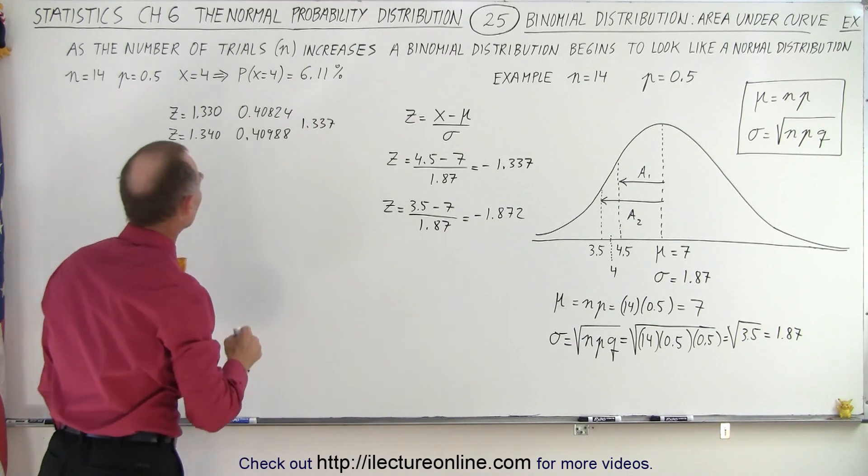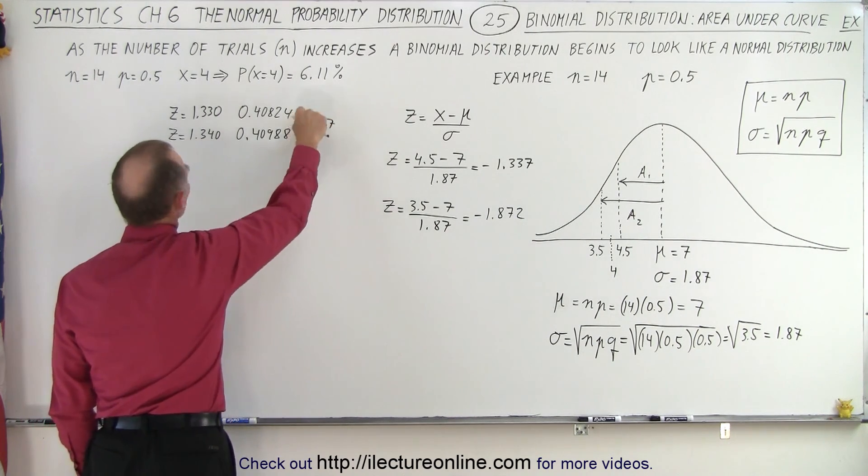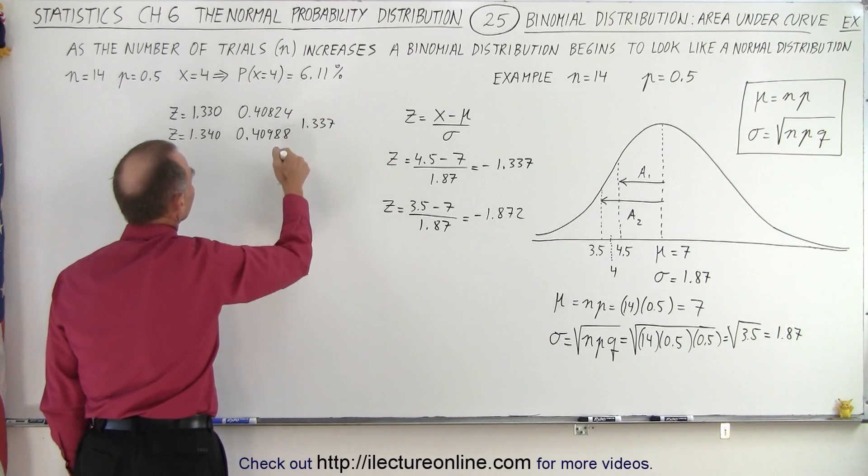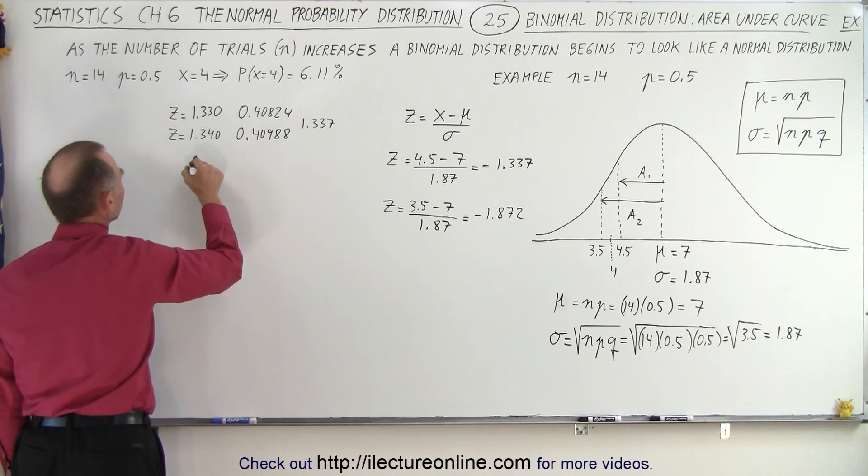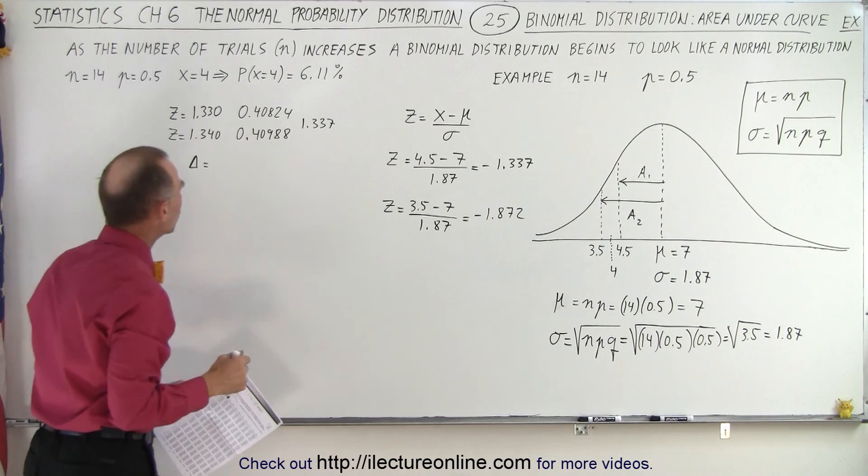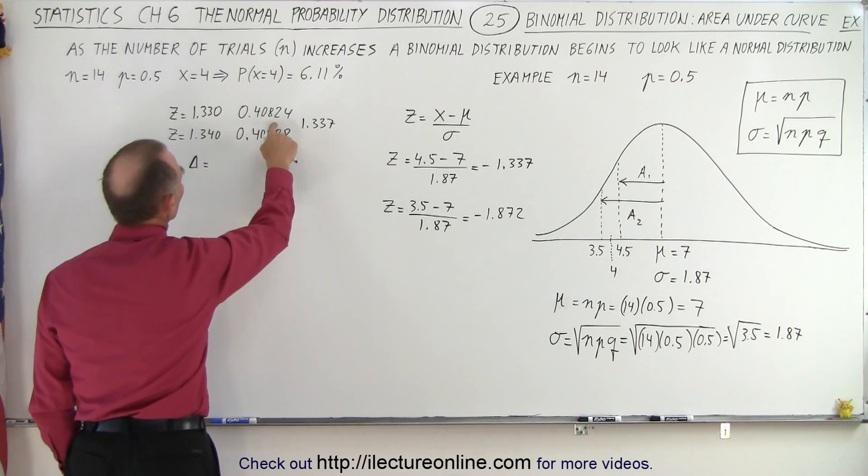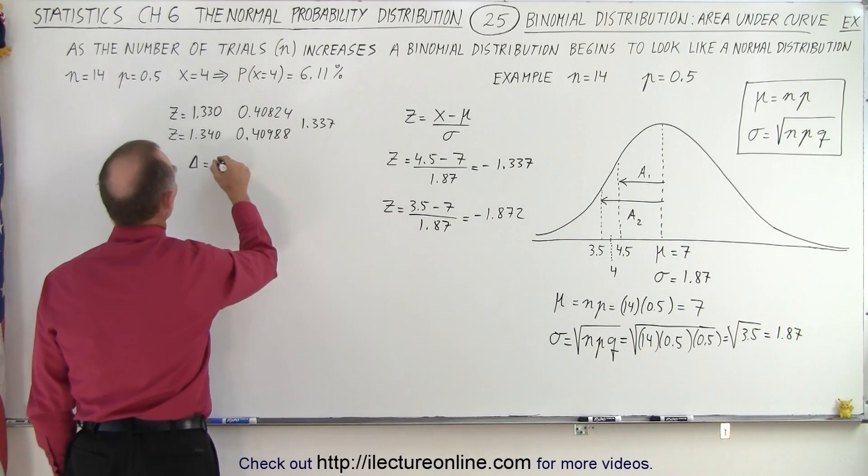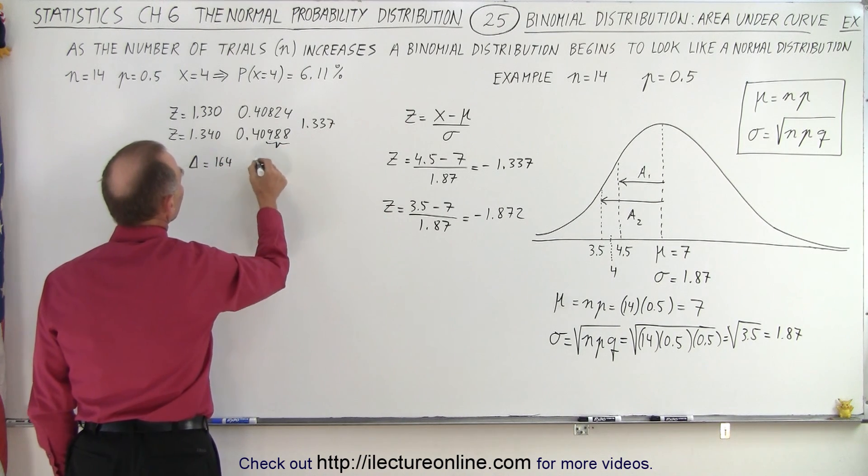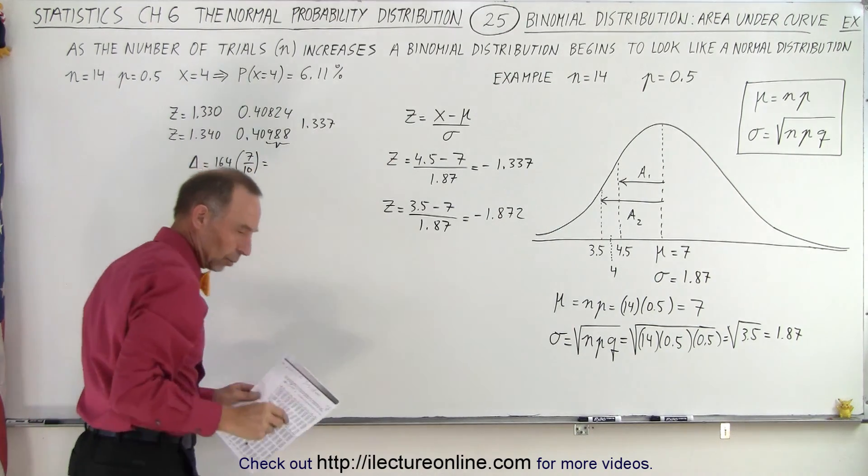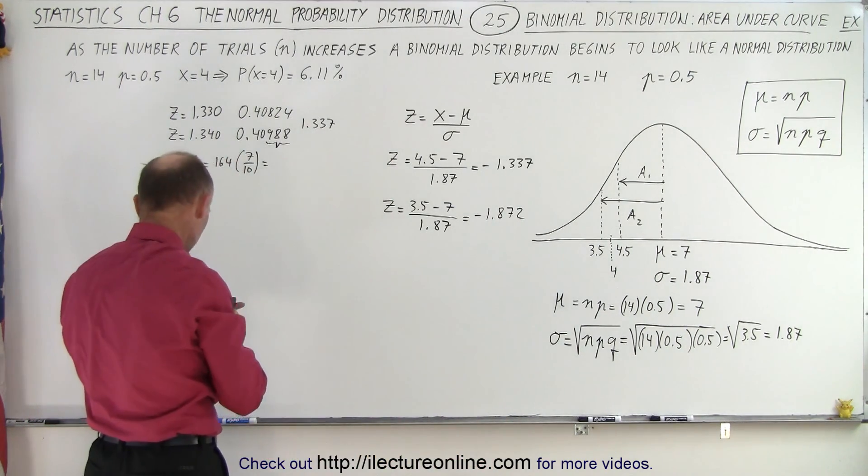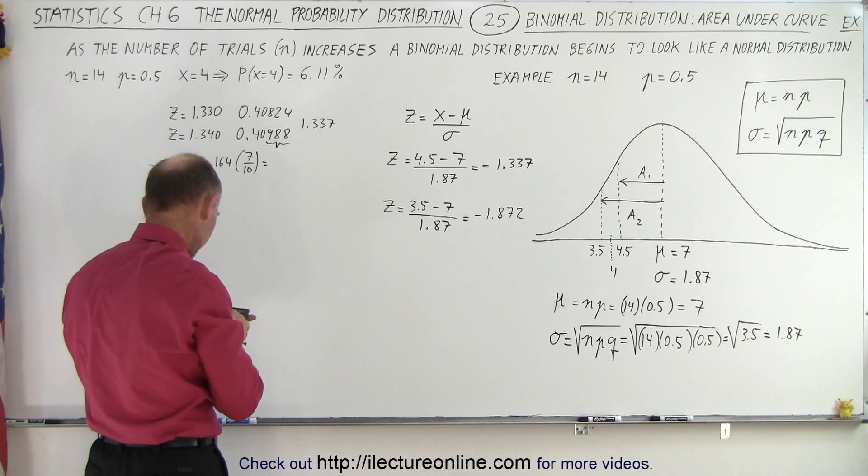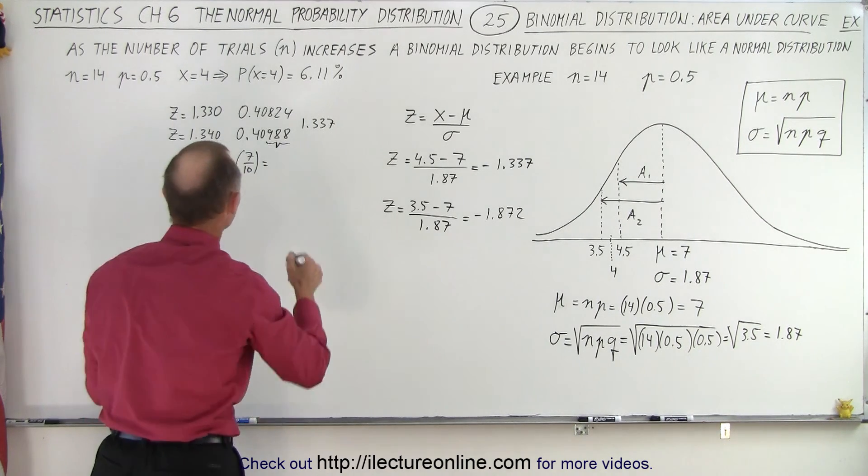But notice I have 1.337, so I need to extrapolate. I need seven tenths the way from there to there, so I need to take the difference, the delta, which is equal to 988 minus 824, that would be 164 for the last three decimal places, and I need to multiply that times seven tenths. So 164 times 0.7 is equal to 115.